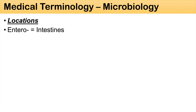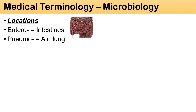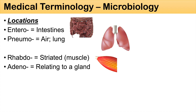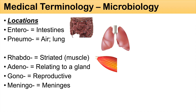A lot of microbiological organisms are described by where they inhabit — locations specifically. Some of these include entero, the prefix entero, which means intestines — you can think of enterobacter or enterobactericiae. Pneumo, which means air or lungs — you can think of pneumococcus. Rhabdo, which means striated, in the context of striated muscle. Adeno, which means relating to a gland — you can think of adenovirus.